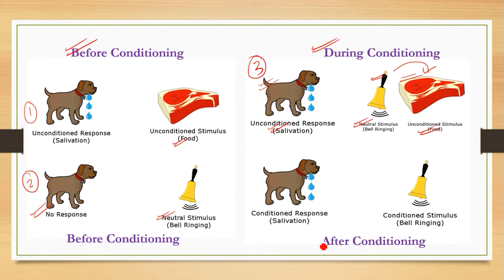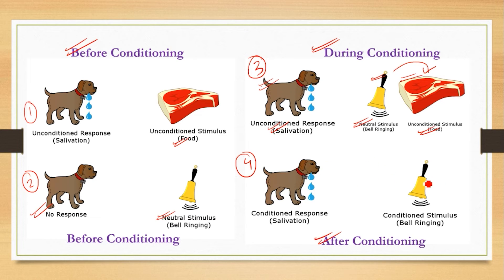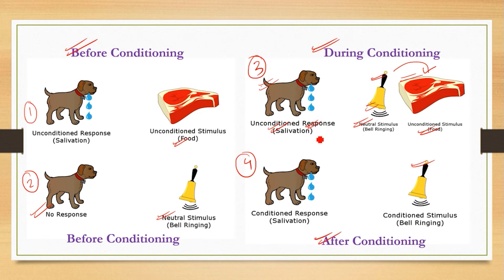Step four is after conditioning. After we have created a relationship between a stimulus and a response, you no longer need the food. If you just ring the bell, the dog will start to salivate, because it has learned that when the bell rings, it is time to get food. Even without seeing any food, just hearing the bell ring causes the dog to salivate — it is now conditioned. This is conditioning: the creation of a relationship between stimulus and response.